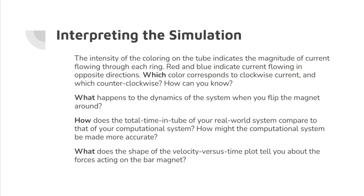The intensity of the coloring on the tube indicates the magnitude of current flowing through each ring. Red and blue indicate current flowing in opposite directions. Which color corresponds to clockwise current and which to counterclockwise, and how do you know? By applying Lenz's law, you can deduce that red corresponds to counterclockwise and blue to clockwise.